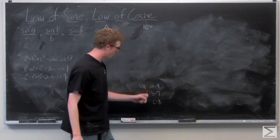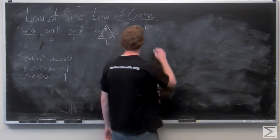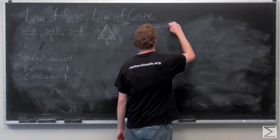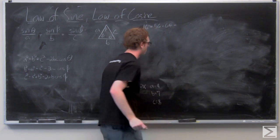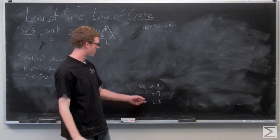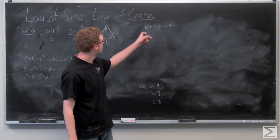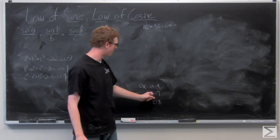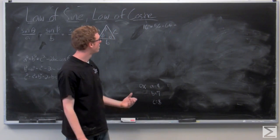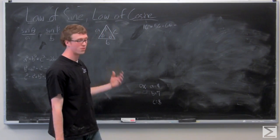So we have A squared equals B squared plus C squared minus 2BC cosine of the angle opposite A, which is theta.